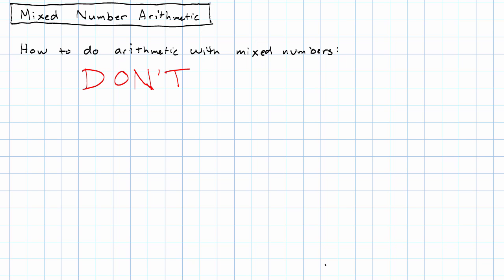We rewrite our mixed numbers as improper fractions, do our arithmetic, and then convert back to a mixed number. So for example, if we wanted to multiply 1 and 2 thirds times 2 and a half,